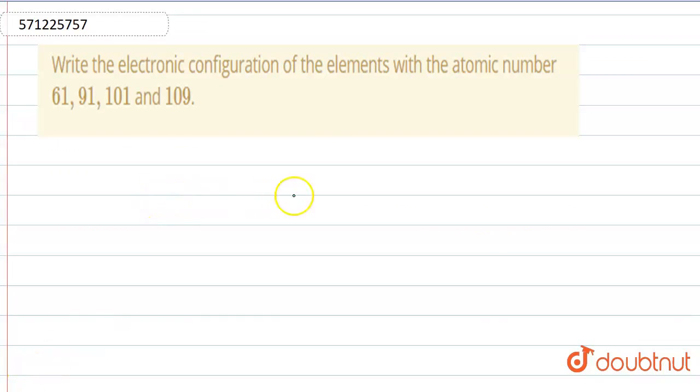So, the question is, write the electronic configuration of the elements with atomic numbers 61, 91, 101 and 109. Okay, the electronic configuration of these elements will be: